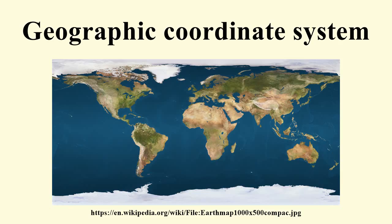Geostationary satellites are over the equator at a specific point on Earth, so their position relative to Earth is expressed in longitude degrees only — their latitude is always 0, that is, over the equator. Similar coordinate systems are defined for other celestial bodies, such as a well-defined system based on the reference ellipsoid for Mars, and selenographic coordinates for the Moon.